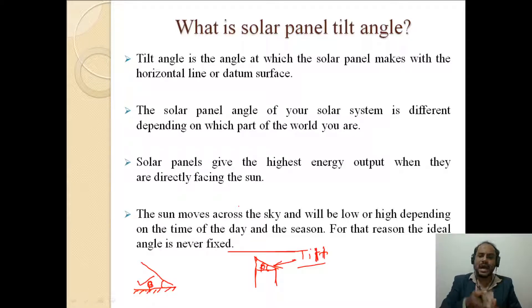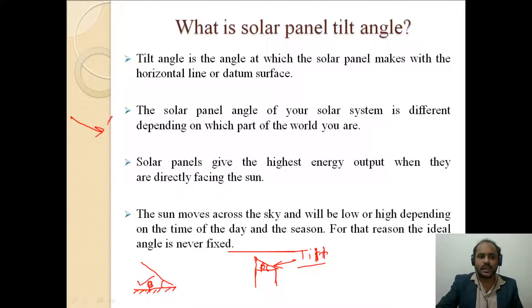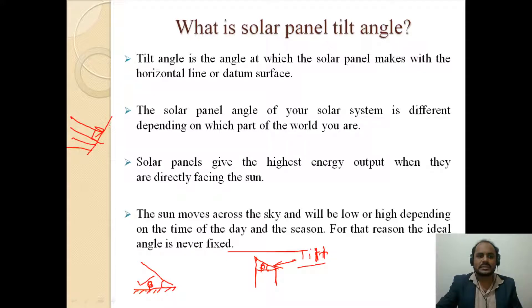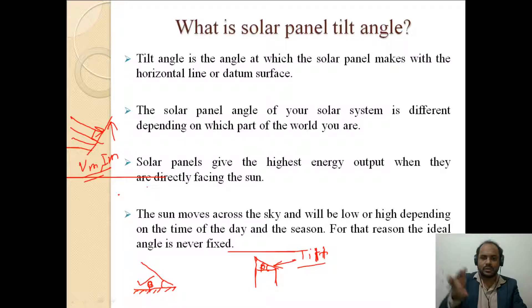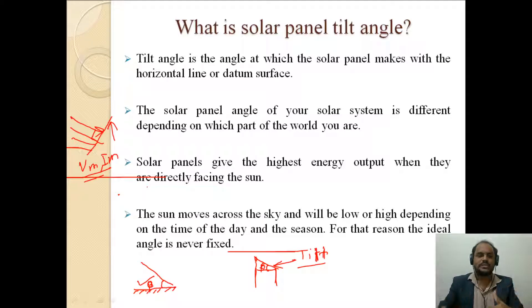The solar panel gives the highest energy output when it is directly facing the sun. The solar radiation should fall in the perpendicular direction onto the solar panel. In that case, the maximum voltage and maximum current are generated from the individual solar panel, meaning more energy is harvested when solar radiation falls exactly perpendicular to the panel surface.